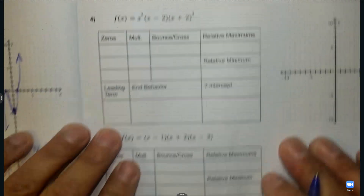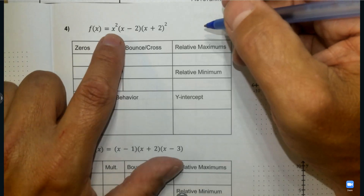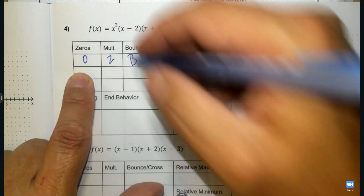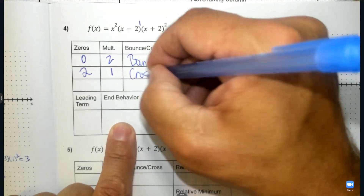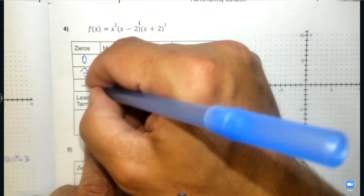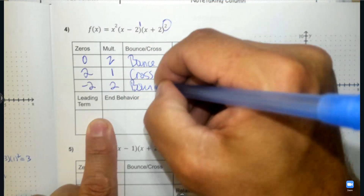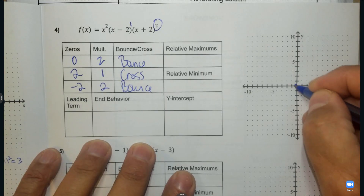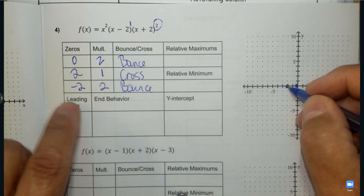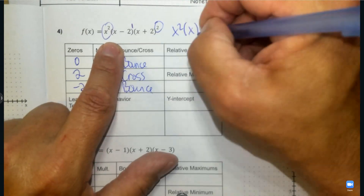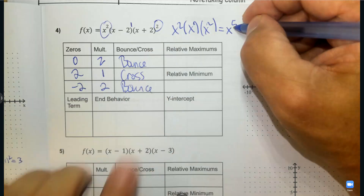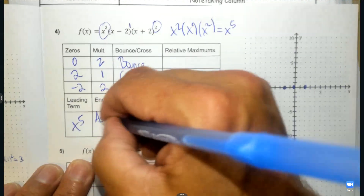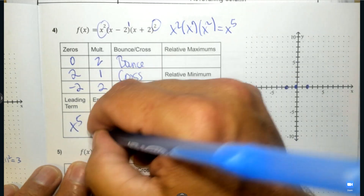Number 4. x squared: plug in 0 and the answer is 0, with an even exponent — so it's going to bounce at 0. Positive 2 has an odd exponent (invisible), so it's going to cross. Negative 2 has an even exponent, so it's going to bounce. For the power term: x squared times x times x squared — add the exponents: 2 plus 1 plus 2 — gives x to the fifth. That means the right end goes up and the left end goes down.